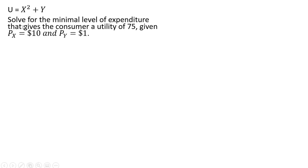We want to solve for the minimal level of expenditure that gives a consumer a utility of 75, assuming that the price of good x is $10 and the price of good y is $1.